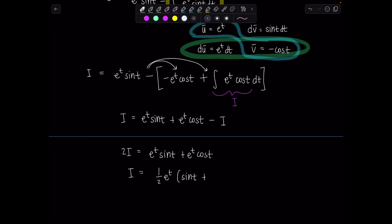Now you just treat i like some variable you're solving for. So move it over to the left. So 2i is e to the t sine t plus e to the t cosine t. Isolate it completely. So i is 1 half. Let me factor out e to the t. And then you just have sine t plus cosine t. And then here's that awkward moment. You have to remember to put plus c.